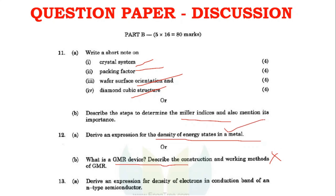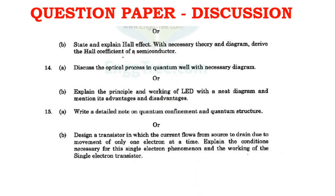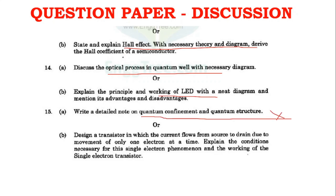In the April-May 2024 paper, density of electrons carries 13 to 16 marks, and Hall effect is also present. Optical process and quantum well questions appear in Unit 4. Working of LED, laser diode, and solar cells are confirmed three questions. Quantum confinement and quantum structure are very important, and single electron phenomena and single electron transistor appear across multiple units.